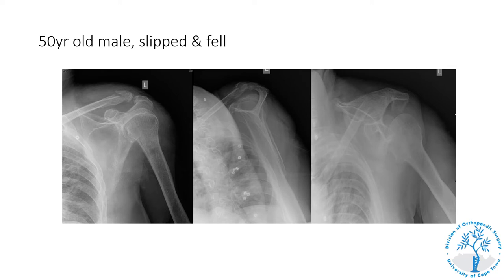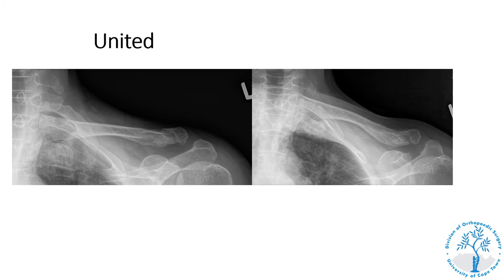The next case is a 50-year-old male that slipped and fell and injured his left shoulder. On the series of X-rays he sustained a lateral third clavicle fracture that is minimally displaced. For injuries around the shoulder we prefer three views: an AP view, a scapular lateral view, and a modified axillary view. The fracture was successfully treated non-operatively. It was undisplaced or minimally displaced because the coracoclavicular (CC) ligaments were intact, preventing the medial part of the clavicle from displacing.